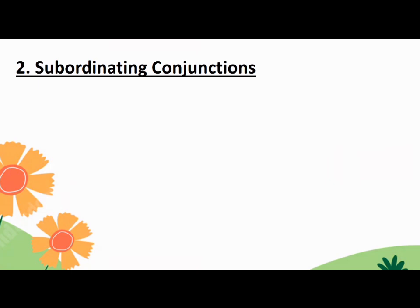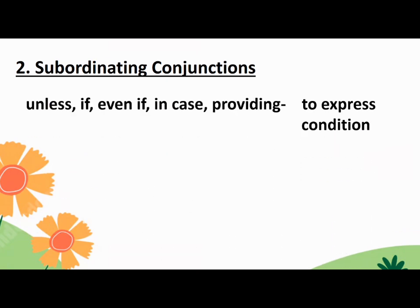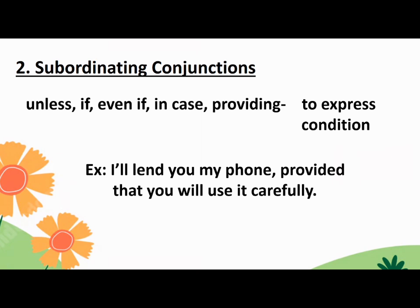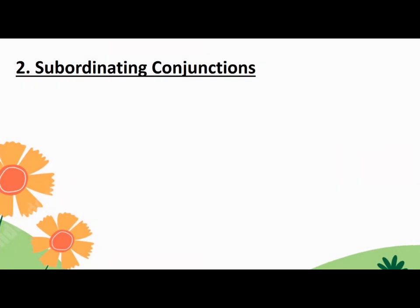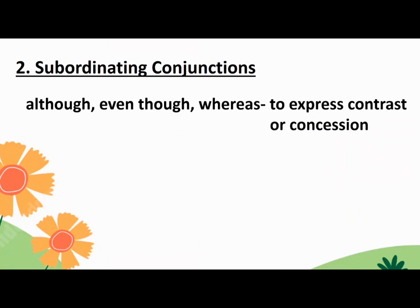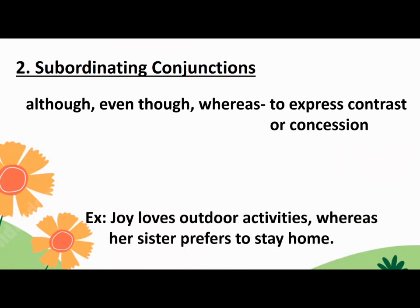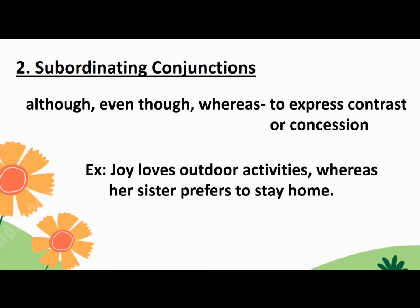Other subordinating conjunctions used to express condition are: Unless, If, Even if, In case, Providing. Example: I'll lend you my phone provided that you will use it carefully. More types used to express contrast or concession are: Although, Even though, Whereas. Example: Joy loves outdoor activities whereas her sister prefers to stay home.